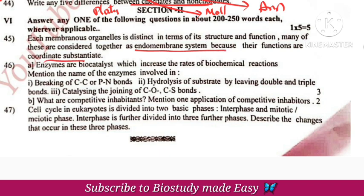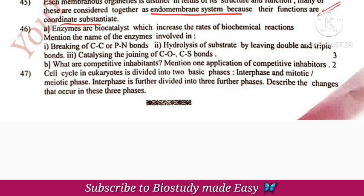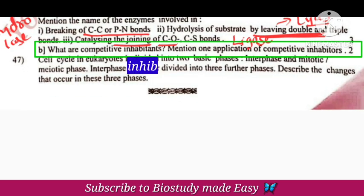Endomembrane system — I will explain its functions. Enzyme classification is very important; in every question paper the enzyme question is repeated. The breaking of carbon-carbon and P-N bonds involves hydrolysis enzymes (hydrolases). The double-bond reaction involves lyases. The joining of carbon and oxygen involves ligases. Competitive inhibitors are molecules similar in structure to the substrate that compete for the active site of the enzyme, preventing substrate attachment. Factors affecting enzyme activity include competitive inhibitors.